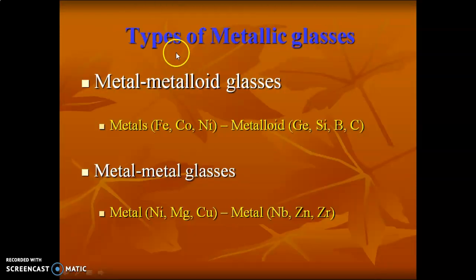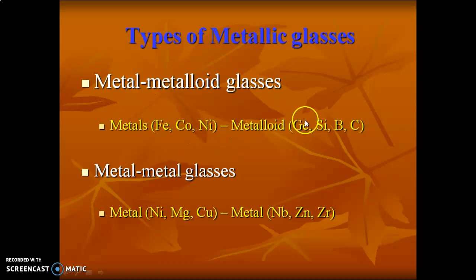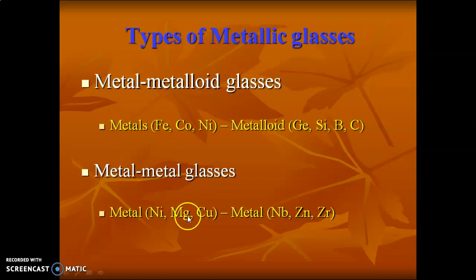The types of metallic glasses correspond to two types: metalloid glasses and metal-metal glasses. Metalloid glass examples — metals: iron, copper, nickel; metalloids: germanium, silicon, boron, carbon. Metal-metal glasses examples — metals: nickel, magnesium, copper; with zinc and zirconium.